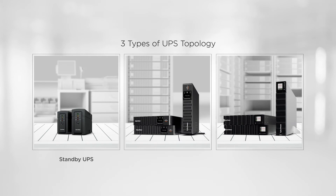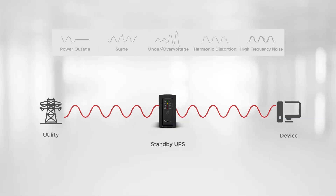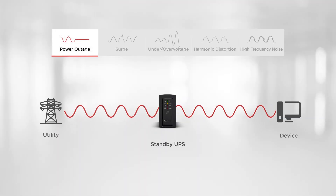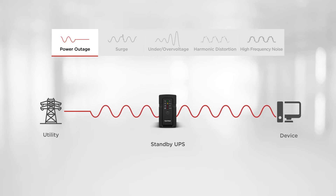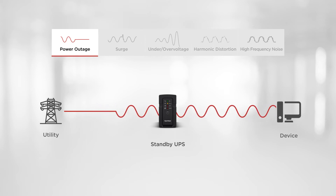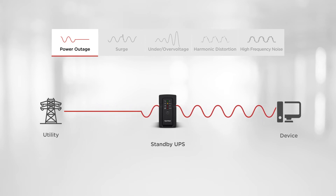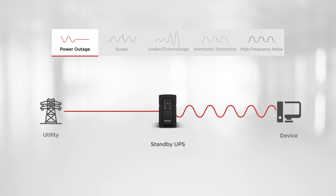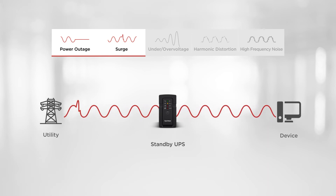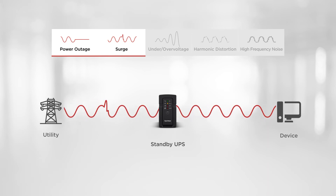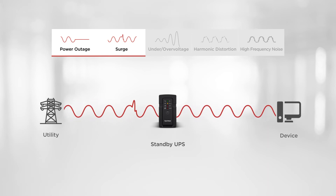There are three main topologies of UPS on the market. A standby UPS has the most basic type of topology. With the built-in battery, it can provide temporary power for you to save important data and perform safe shutdown during a blackout. Additionally, featuring surge protection function, it can deliver protection against surges caused by lightning.